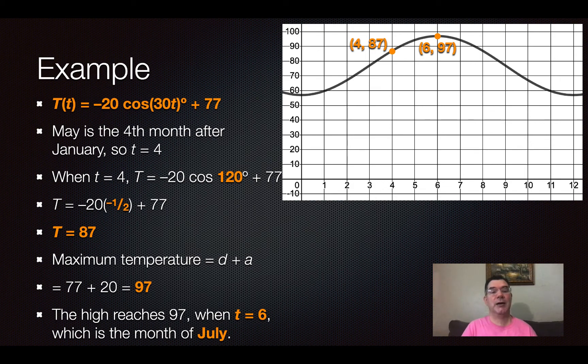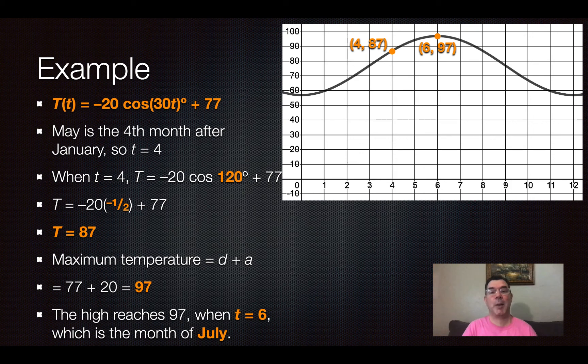So those are just two examples of how to find certain data points if you have a periodic model. If you have any questions about that, please let me know and I will see you tomorrow.